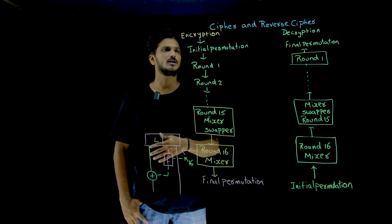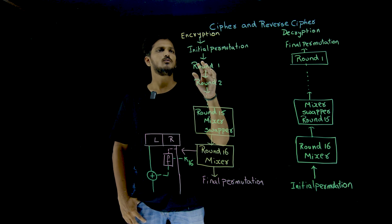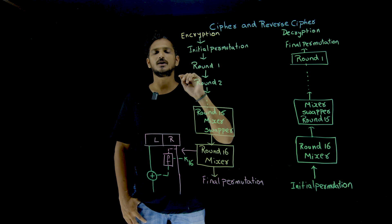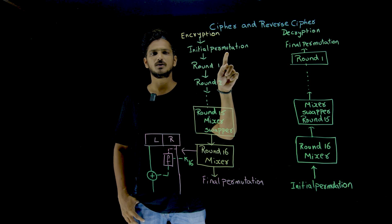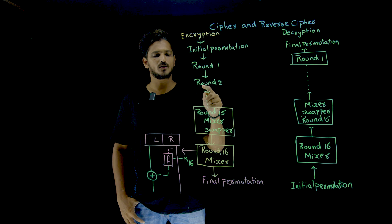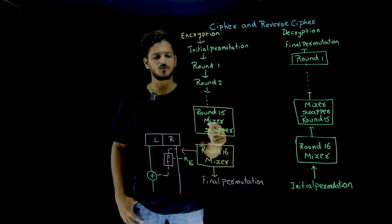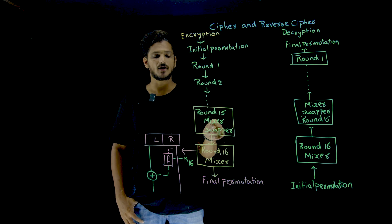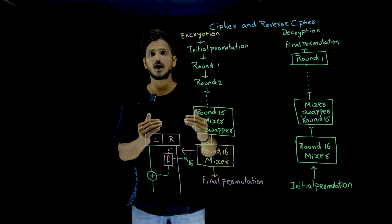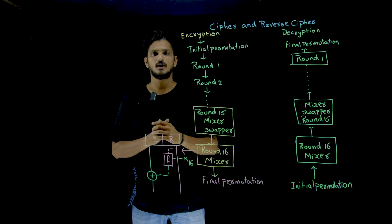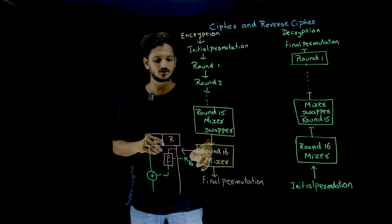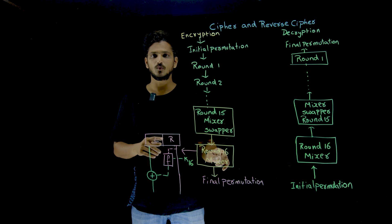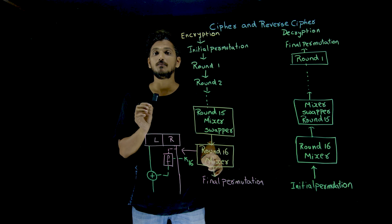Now coming to today's class — what happens during the encryption in DES. First it will go to the initial permutation, then round 1, round 2, so on, round 15, then it will come into round 16. Each round we are having a mixer and swapper. So what happens inside the mixer? In round 16, we are having only mixer.